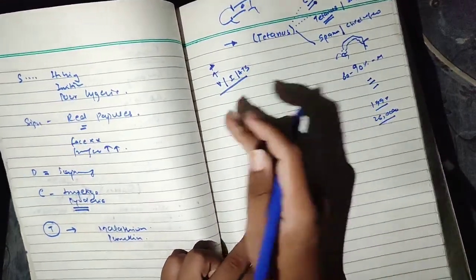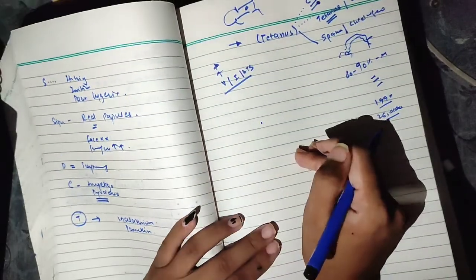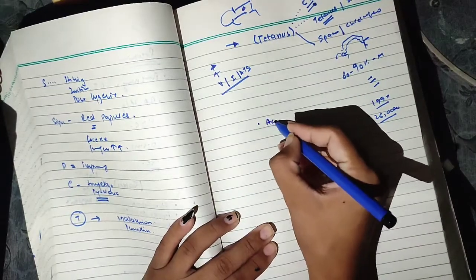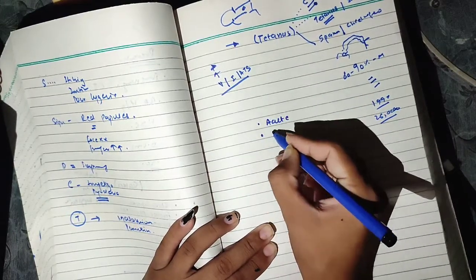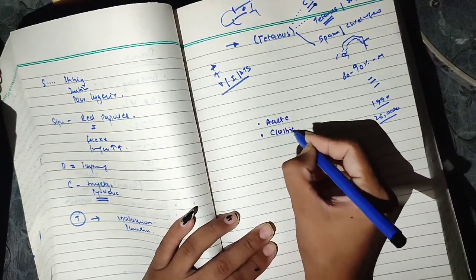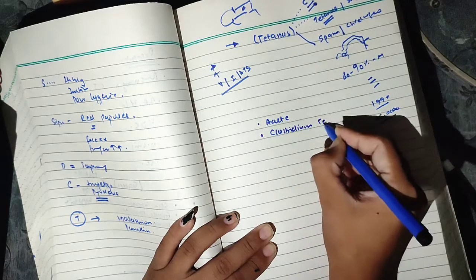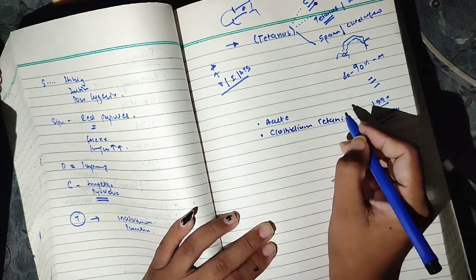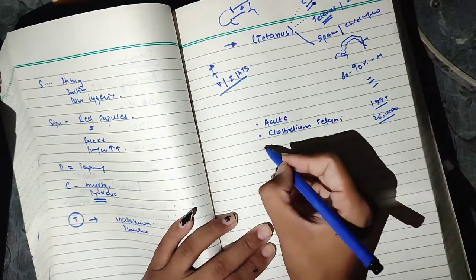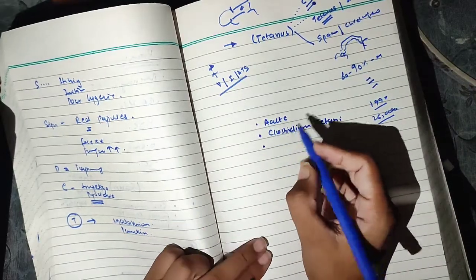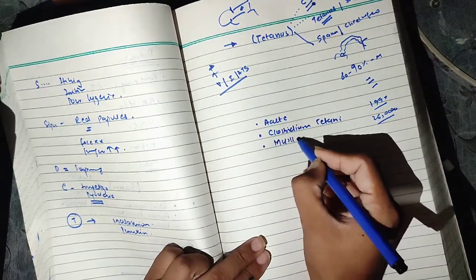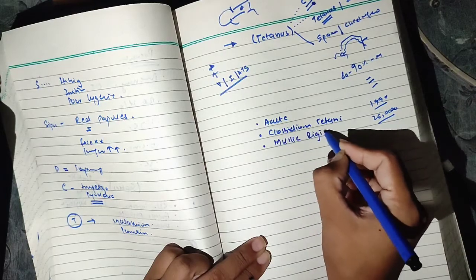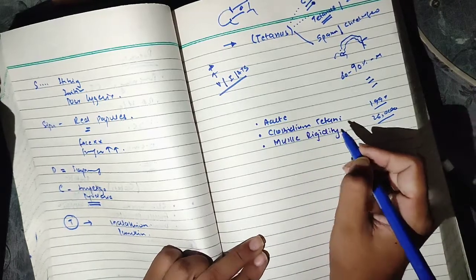So we start with tetanus. Initially, tetanus is written as an acute disease caused by Clostridium tetani. And clinically, its main manifestation is that muscle rigidity starts, because of muscle spasm. This will be the definition.